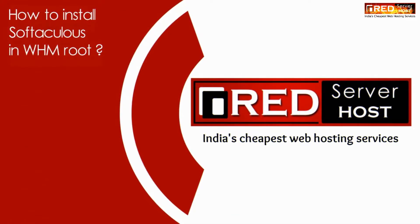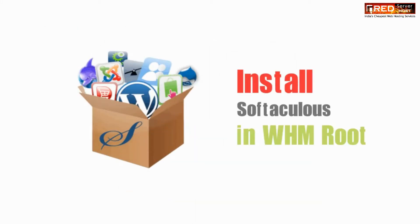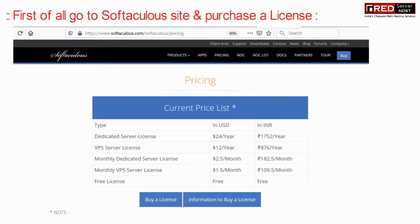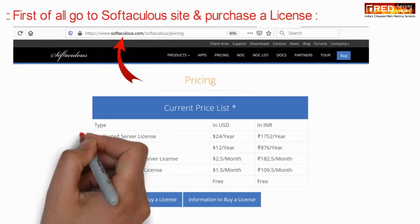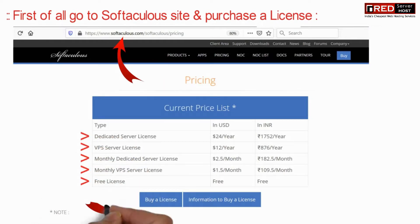Today in this video we will learn about how to install Softaculous in WHM. First of all, go to the Softaculous website and purchase a license. You can select a proper license as per your server.